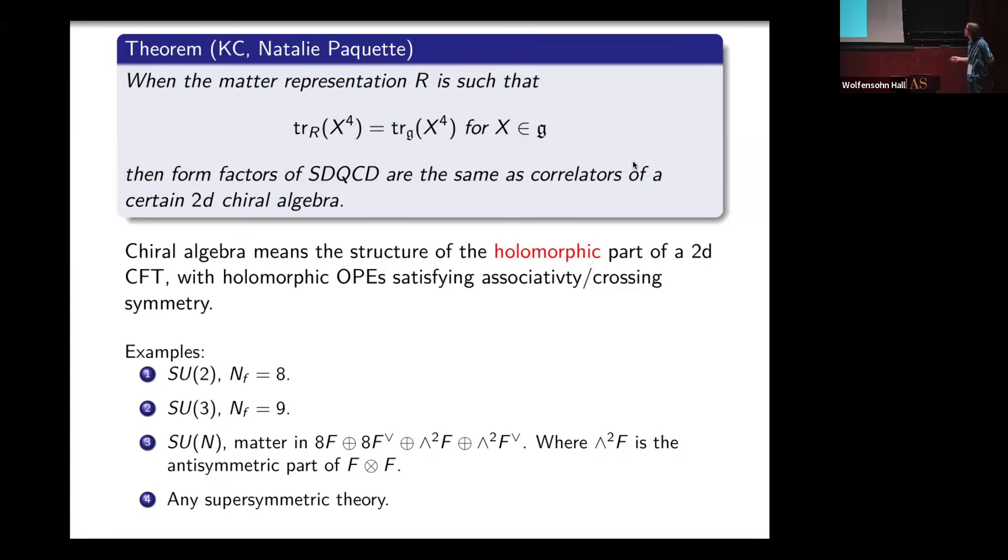I'm going to mostly focus on these examples, but this cancellation also holds for any supersymmetric theory. The reason I don't want to study a supersymmetric theory is that most of the amplitudes we are studying are all zero in any supersymmetric theory. The two-loop all-plus amplitude vanishes.